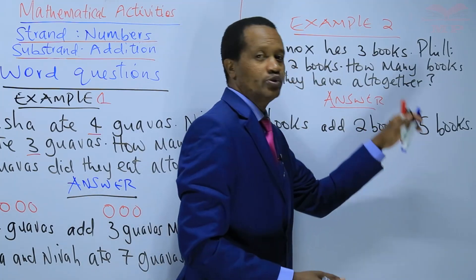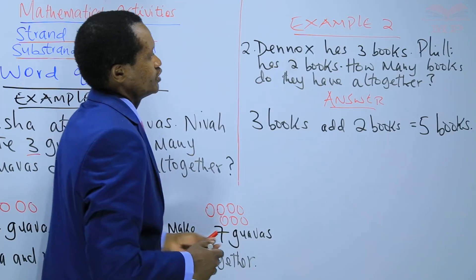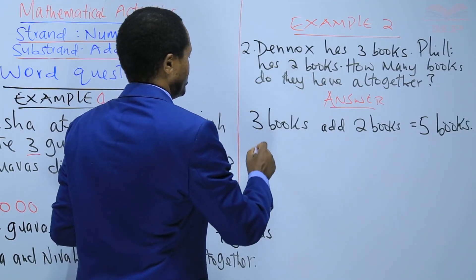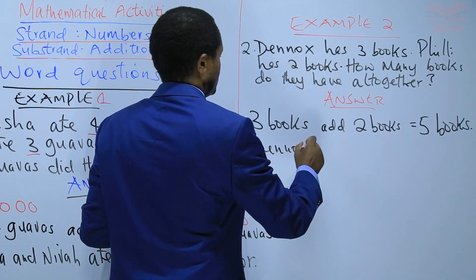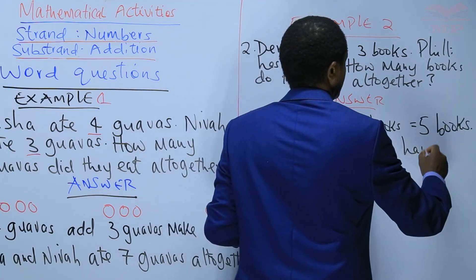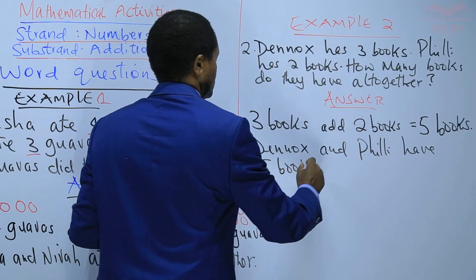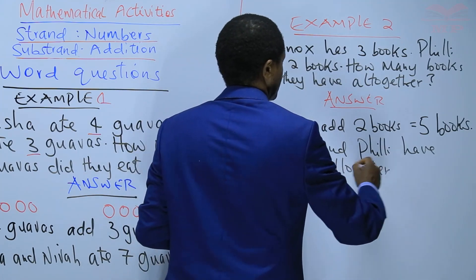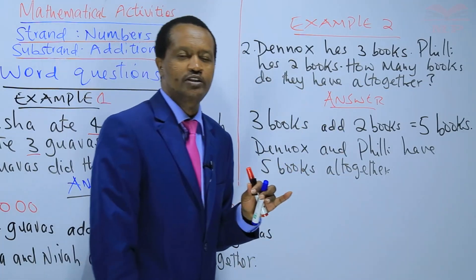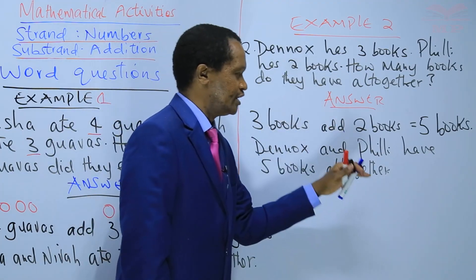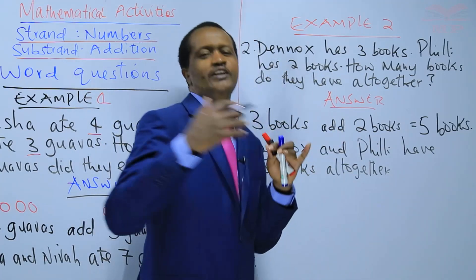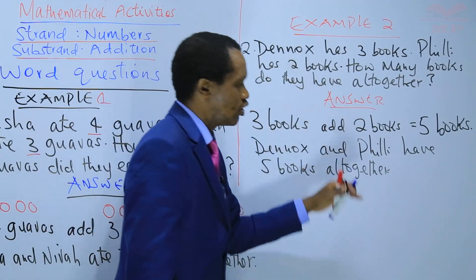Three books add two books is equal to five books. What was the question? How many books did they have all together? The answer is Dinox and Philly have five books all together. Can you say it: Dinox and Philly have five books all together.